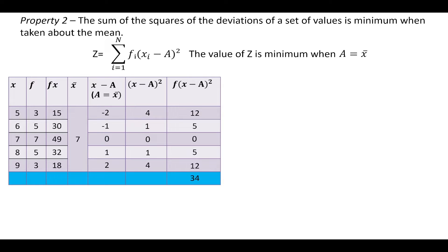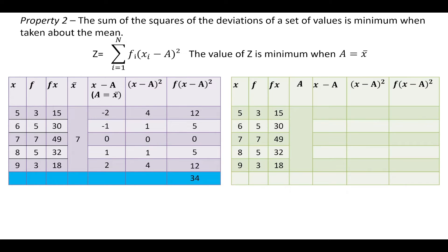Now we will consider the second case. In the second case, we will select any random value for a. Suppose we select a as 6, then the values of deviation will be minus 1, 0, 1, 2, and 3.